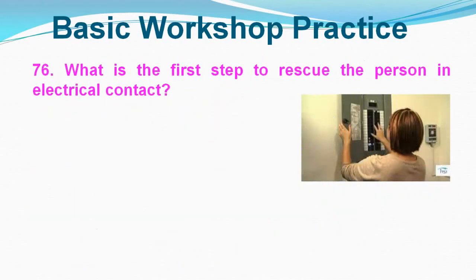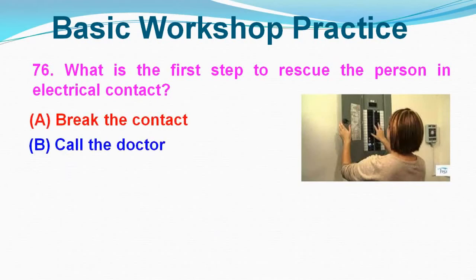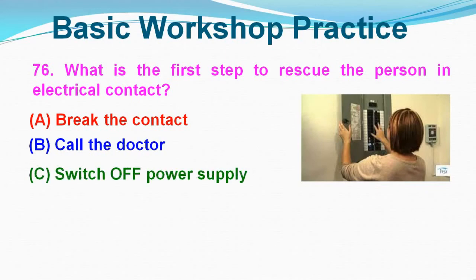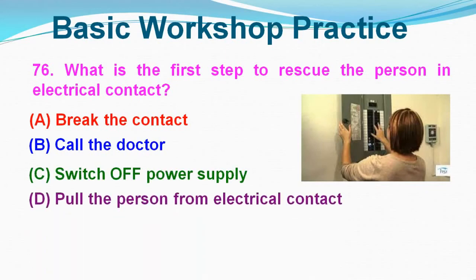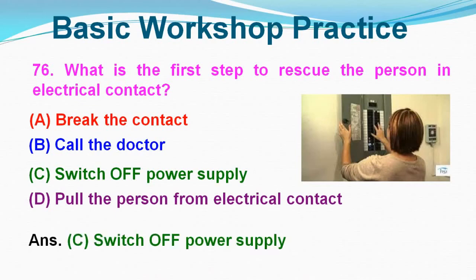Question No. 76: What is the first step to rescue a person in electrical contact? Option A: Break the contact, Option B: Call the doctor, Option C: Switch off the power supply, Option D: Pull the person from electrical contact. Correct answer is Option C, Switch off the power supply.